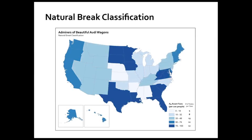Finally, we've got natural breaks. All of these differences are a little bit subtle, but you can tell different stories using different classification methods. Natural breaks uses math behind the scenes to figure out where the natural down-points are between clumps in the data. The class breaks vary quite a bit: 0 to 14, then 15 to 32, then 33 to 49, and so on. In the lowest class there are only five states, but in some higher categories there are 12 or 13. You can end up with very different visual balances depending on the classification you use.